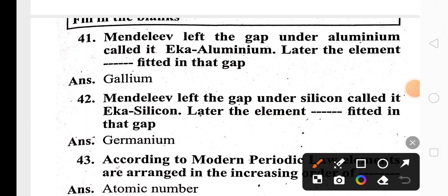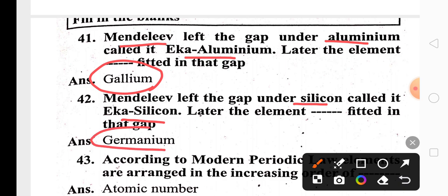In Mendeleev's periodic table, under aluminium there was a gap called Eka-aluminium — now it is filled with gallium. And under silicon, there was a gap named Eka-silicon — now it is filled with the element germanium.